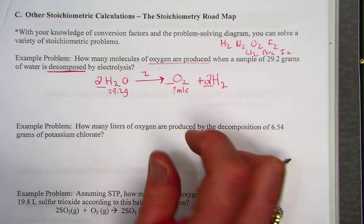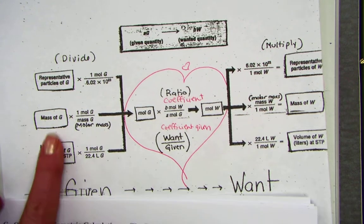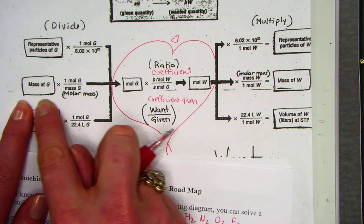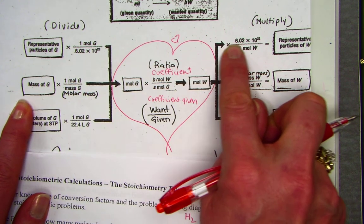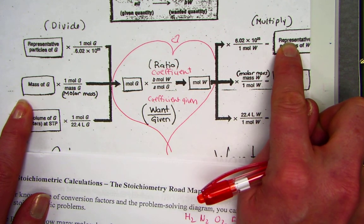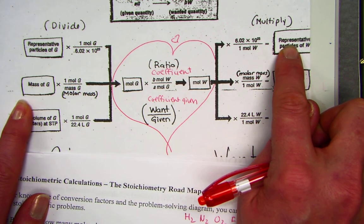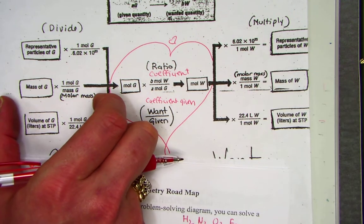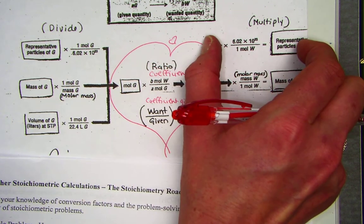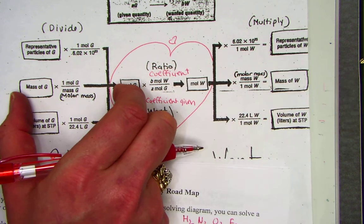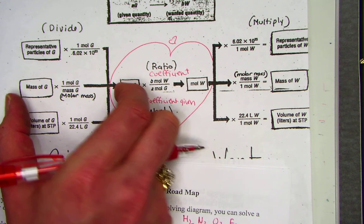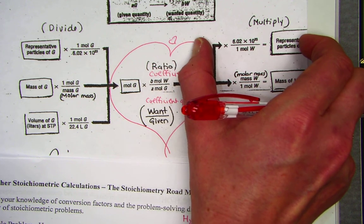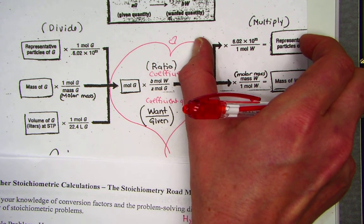Take a peek at your stoichiometry road map. The given is the mass of water. This is our starting point. We want to know all the way over here the number of molecules. That's what representative particles mean: molecules, atoms, or formula units. To move all the way from the left to the right, I can count three conversion factors. Step one, go into the mole. Step two, mole-mole ratio. Step three, we're going to use Avogadro to head out to the world of particles.